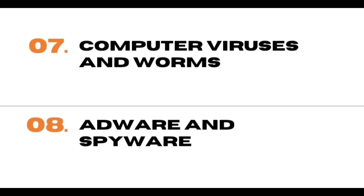One of the most destructive examples of computer crime involves the creation of a computer virus or worm. A computer virus or worm can spread destruction among many users, often destroying the contents of memory, hard disk, and other storage devices. Lastly, adware and spyware are programs that collect specific information about you, ranging from general demographics like your name, address, and internet surfing habits, to credit card numbers, social security numbers, usernames, passwords, or other personal information.